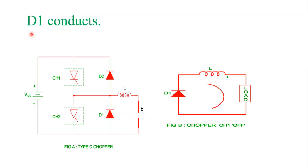When D1 conducts, the inductor starts discharging and changes polarity — this terminal becomes positive and this becomes negative. When this terminal is positive, current flows in this direction, meaning current is again positive and voltage is also positive at the load side. So when D1 is conducting, the chopper works in the first quadrant.